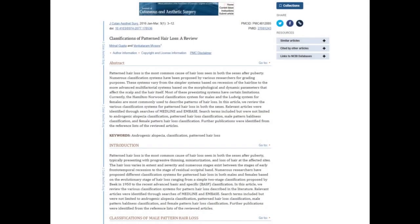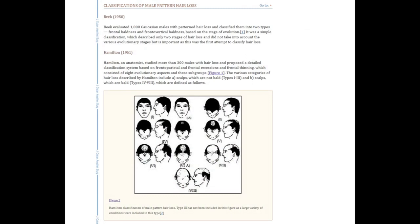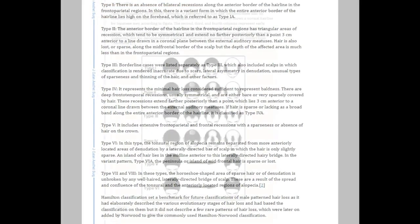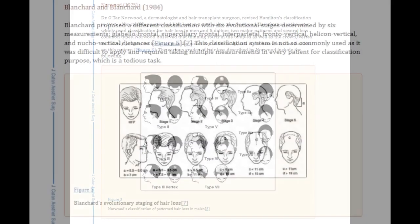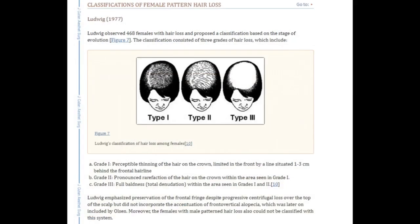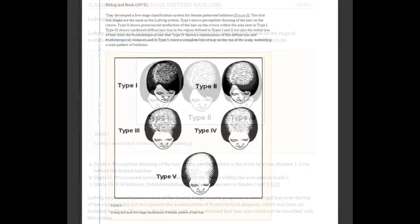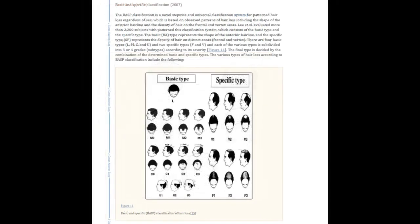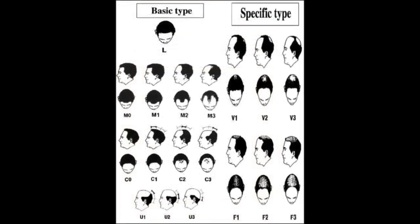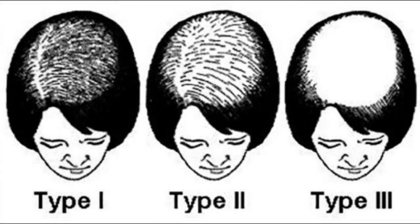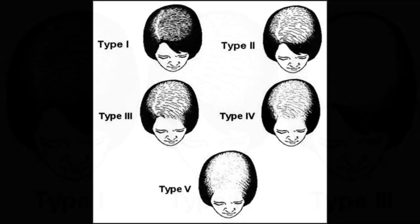DUPA is less predictable in its manifestation. There's a useful publication in the Journal of Cutaneous and Aesthetic Surgery written by Myrno Gupta and Venkataram Mysore that talks about the various types of androgenetic alopecia patterns as well as different progression scales. You can see that there are some common realities with these scales: it typically starts with the front of the hairline as well as the crown and mid-scalp, and these areas progressively expand and get worse over time. But that's just with male pattern baldness for the most part.